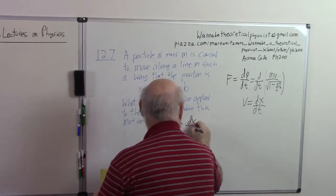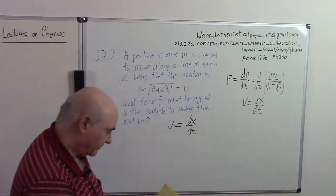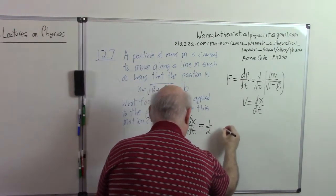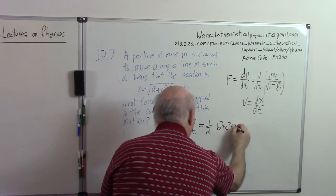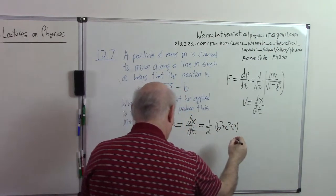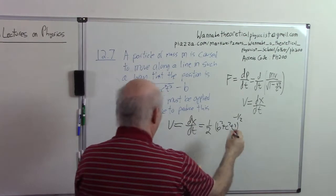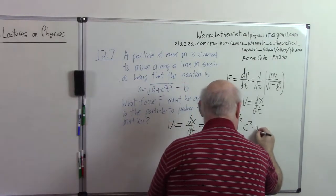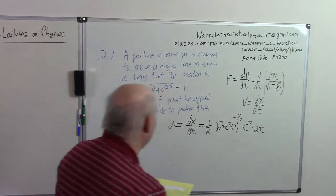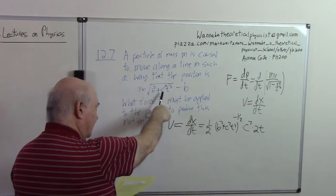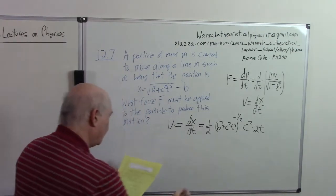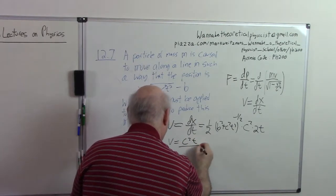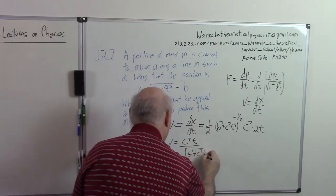V is equal to dx dt. That's substituting x here as a function of time. That's equal to one-half b squared plus c squared t squared to the minus one-half, just taking usual calculus derivatives, times c squared times 2t. By the way, although we're using b and c here, b is just a number, c is the speed of light here. And so this is equal to c squared t over the square root b squared plus c squared t squared.